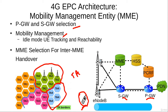When the UE is in idle state and moves from a cell associated with one tracking area to a cell associated with another tracking area, the UE updates its tracking area information with the MME. The significance of this update is that whenever there is an incoming call for this UE, the MME will contact all the cells in that tracking area in order to notify the UE about the incoming call.